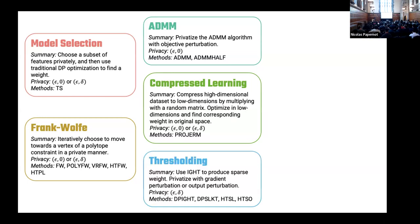Next are thresholding methods. This is super simple. Every time you take a gradient step, you just keep your top k coefficients in absolute value. That's all you have to do.